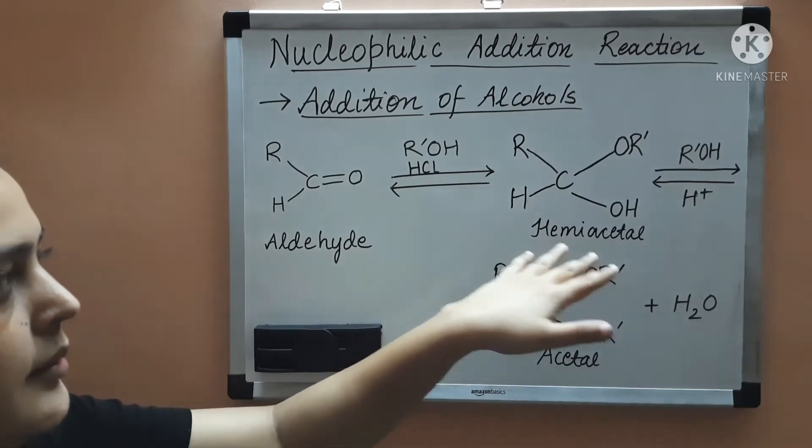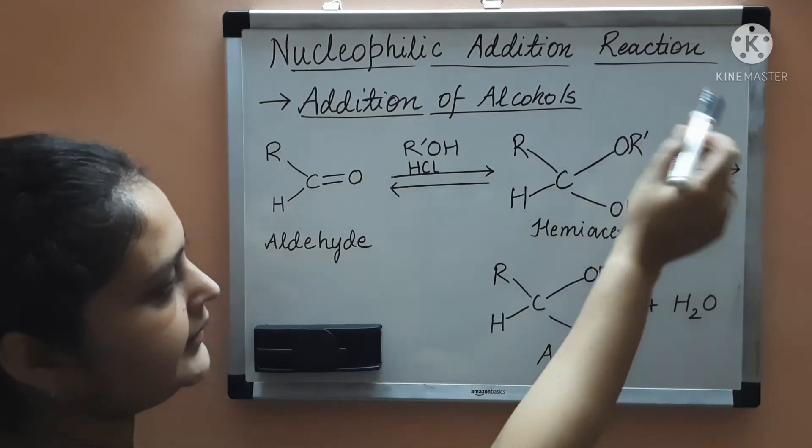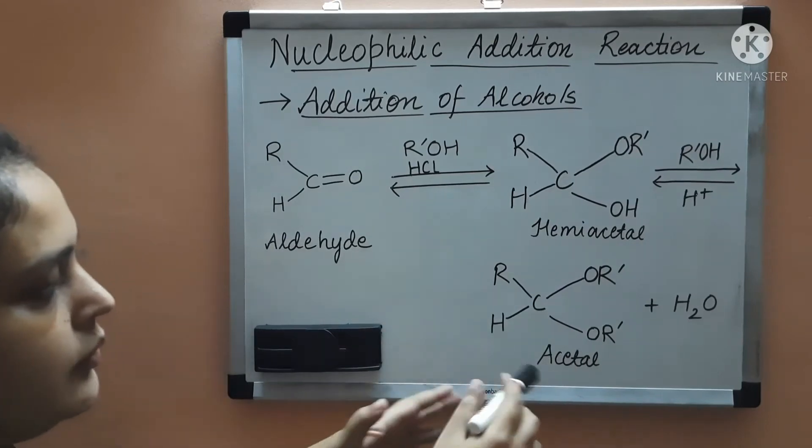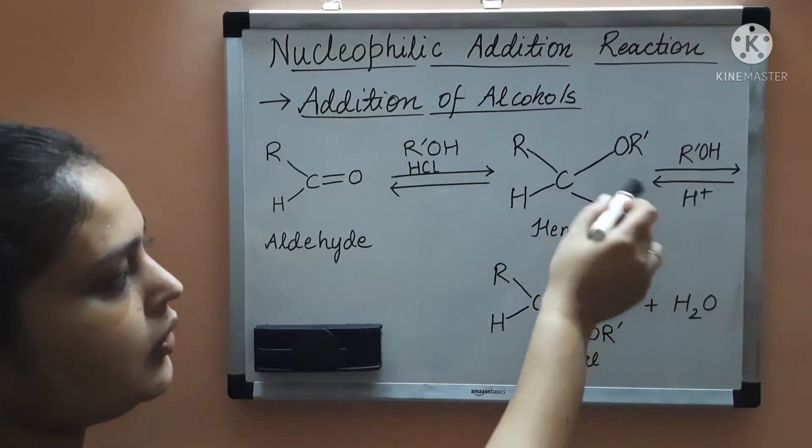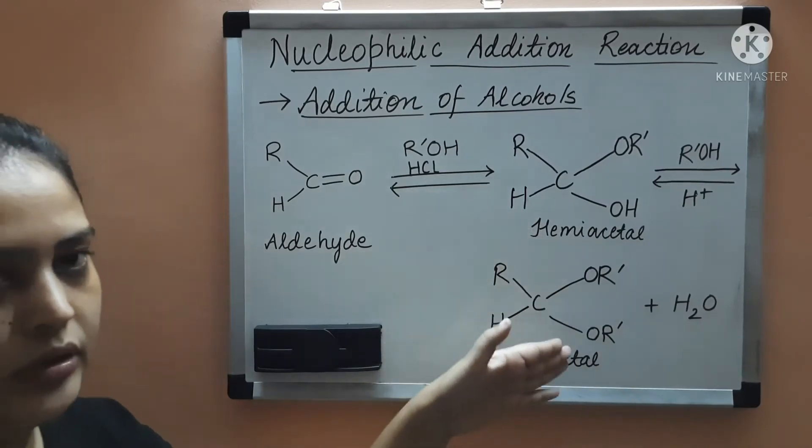Then another alcohol molecule you are adding, then you will get the acetal. Here what happened is that alcohol is converted to alkoxy. So this is dialkoxy compound.